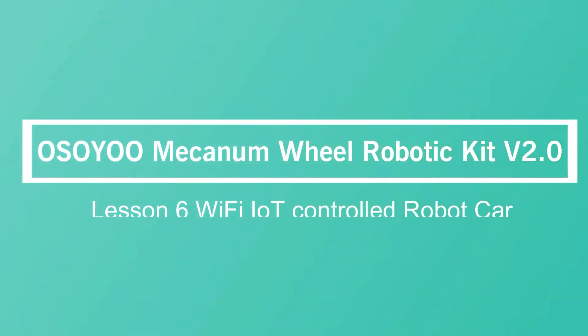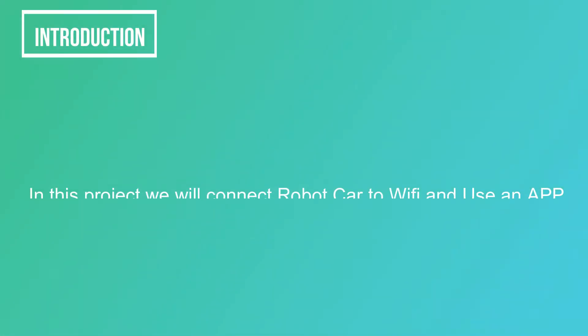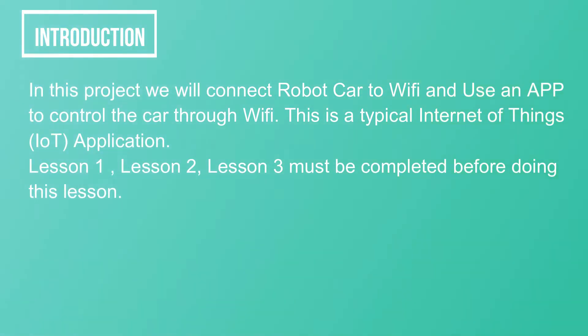Oso Umecanum Wheel Robotic Kit V2.0, Lesson 6: Wi-Fi IoT Controlled Robot Car. In this project we will connect the robot car to Wi-Fi and use an app to control the car through Wi-Fi. This is a typical Internet of Things (IoT) application.